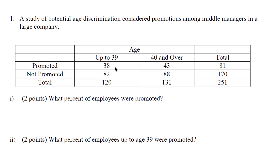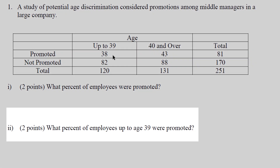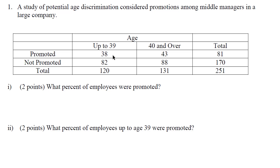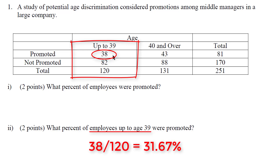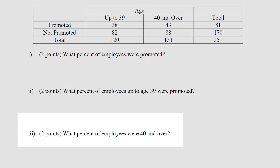Next: what percent of employees up to age 39 were promoted? We're doing a conditional distribution — given that these employees were up to age 39, what percent were promoted? This will only be 120 employees, because these are the employees who were up to age 39. Out of those employees, 38 were promoted, so 38 over 120 is 31.67%.